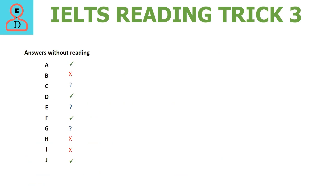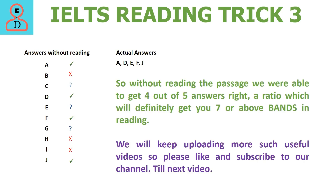This is how our answers look — and remember, we just applied logic and common sense. Let's see what the actual answers are. As you can see, we got 4 out of 5 answers right without reading even a single line from the passage. Four out of five is good enough to get you at least 7 bands in IELTS reading. Please subscribe to our channel if you want to learn more such tricks to improve your band score in IELTS. For other modules, watch the videos we have uploaded on our channel.